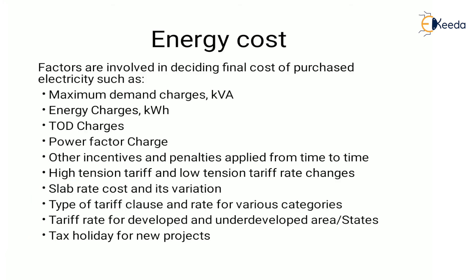Next is electrical energy costs. The factors involved in deciding the final cost of purchased electricity are: first, maximum demand charges in KVA — that is how fast the electricity is used. Next is energy charges — how much electricity is being consumed. Next is time-of-day (TOD) charges, which depend on the peak and non-peak period when the electricity is consumed.